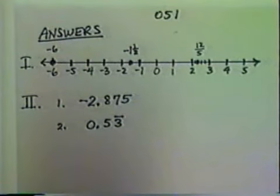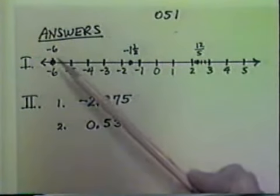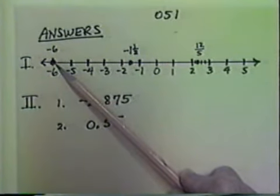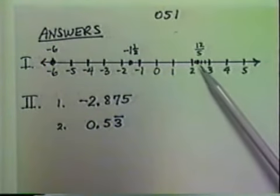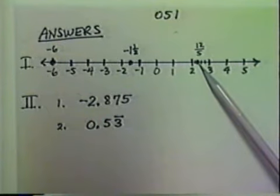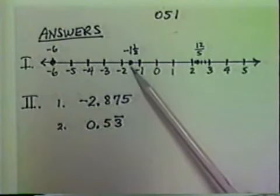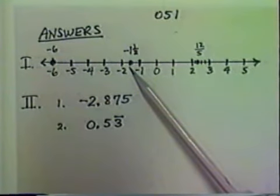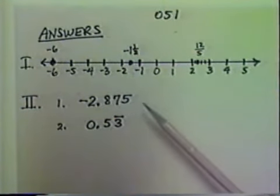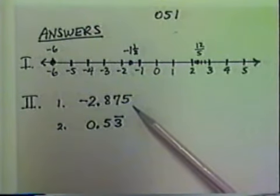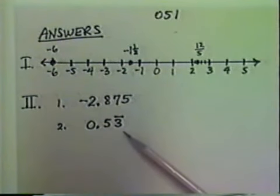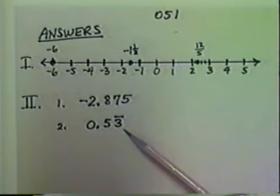Here are our answers. We're going to place on a number line: negative six, twelve-fifths — which is two and two-fifths — and negative one and one-half. The decimal forms of the fractions are negative two and eight hundred seventy-five thousandths, and zero point five three three three three three forever, with the three repeating indicated by the bar.